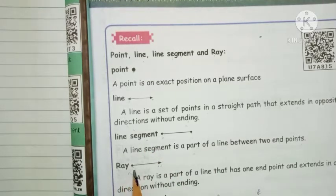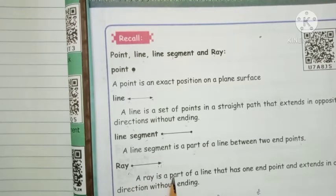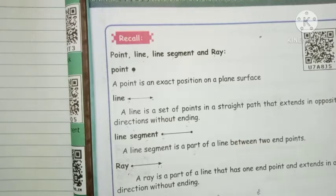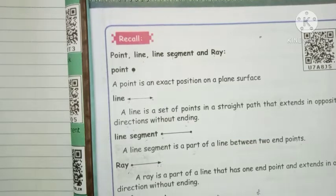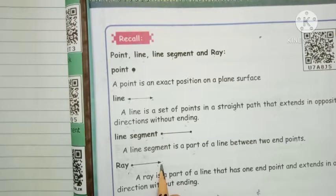Next: ray. A ray has a point and a direction without ending. A ray is a part of a line that has one endpoint and extends in one direction without ending. This is called a ray.